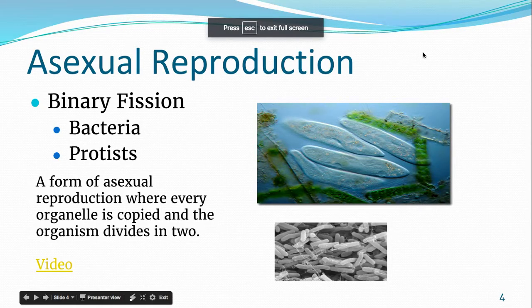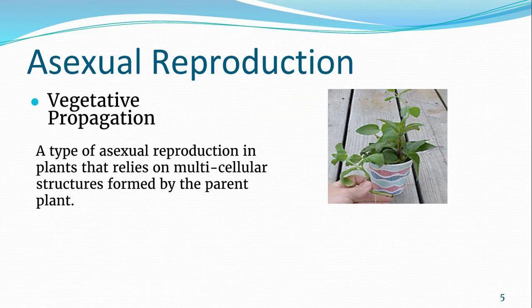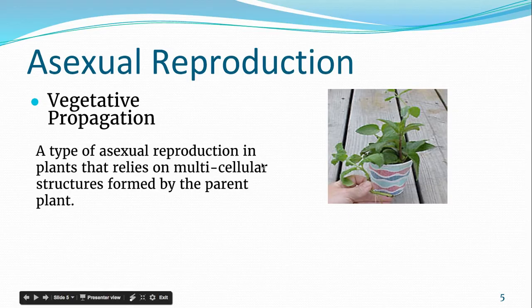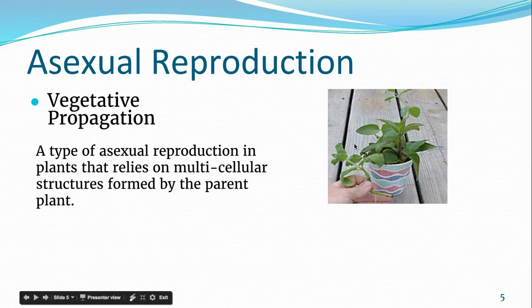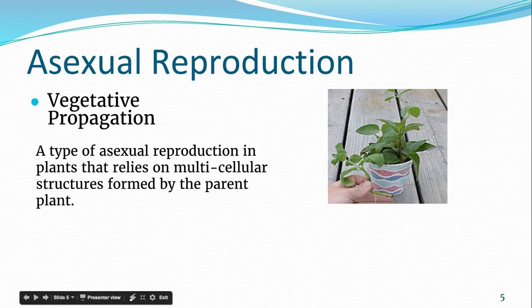So, binary fission — bacteria and protists. Our next type is vegetative propagation. Vegetative refers to plants. Not all plants do this, but some. If you have spider plants at your house — those are the plants generally in hanging baskets that have little vines coming off the edges with what look like baby plants — that's essentially what they are. If you take that little baby plant, cut it off the parent plant, you can grow it into a new individual, but it will be the exact same as the original.